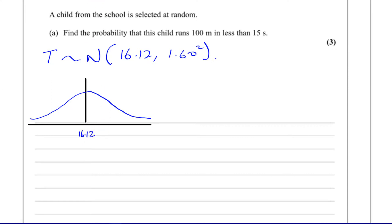And you want to find the probability that they run in less than 15 seconds, so 15 seconds are going to be over here somewhere. So you need to find the area of this section once we've standardized everything. We've got to find what the value of z is for this 15.